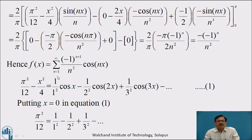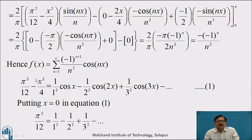Hence f(x) = Σ(n=1 to ∞) (−1)ⁿ⁺¹/n² · cos nx. Expanding: f(x) = (1/1²) cos x − (1/2²) cos 2x + (1/3²) cos 3x − ⋯ — call this equation (1). Substituting f(x) = π²/12 − x²/4 and putting x = 0: the left side gives π²/12 (since the x² term vanishes), and on the right side cos 0 = 1 for all terms. Therefore π²/12 = 1/1² − 1/2² + 1/3² − ⋯